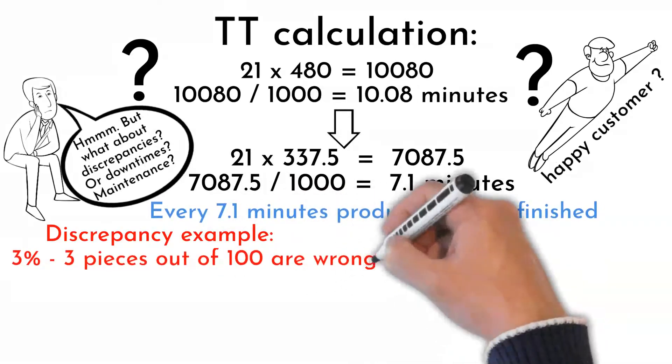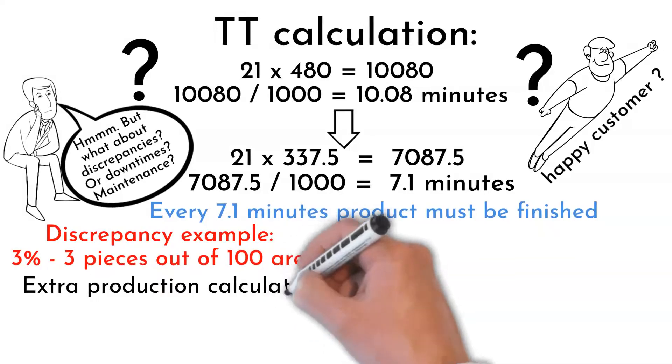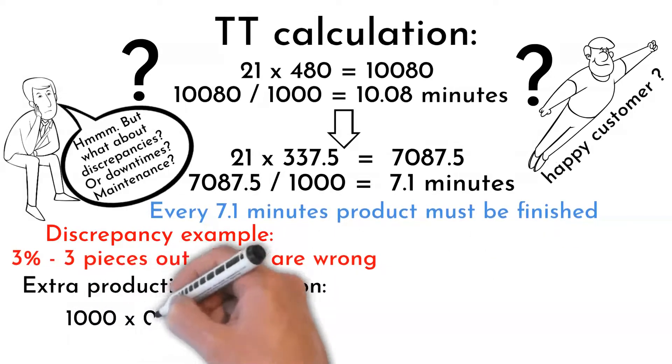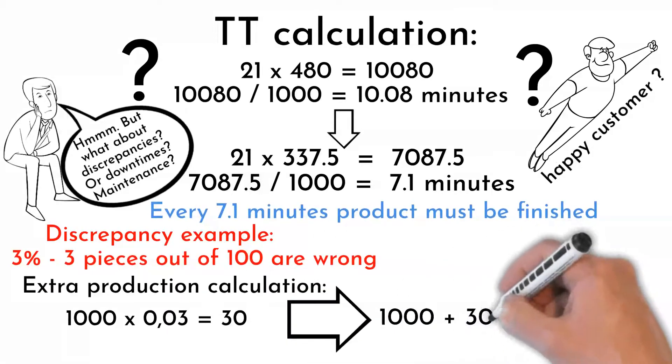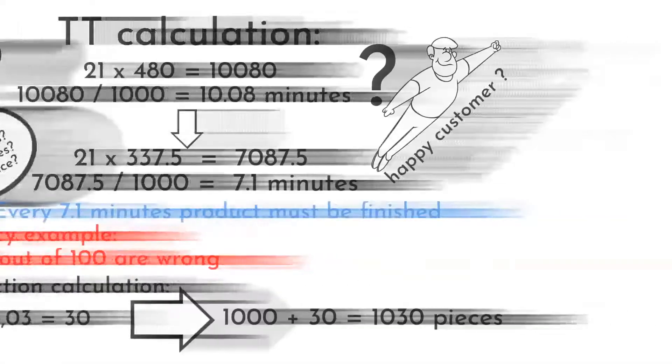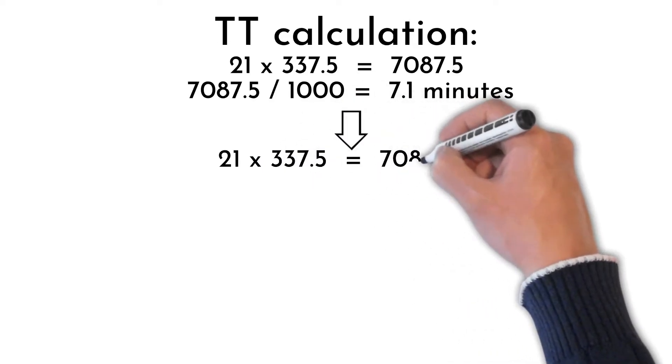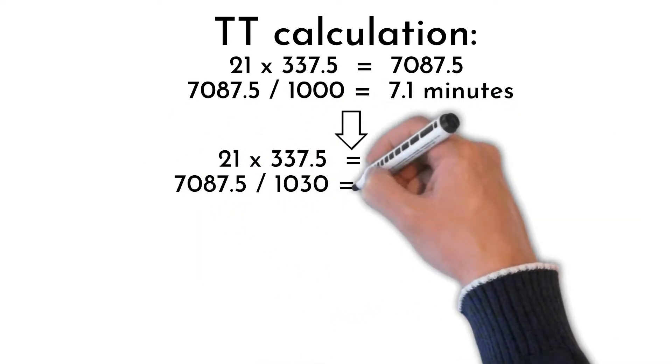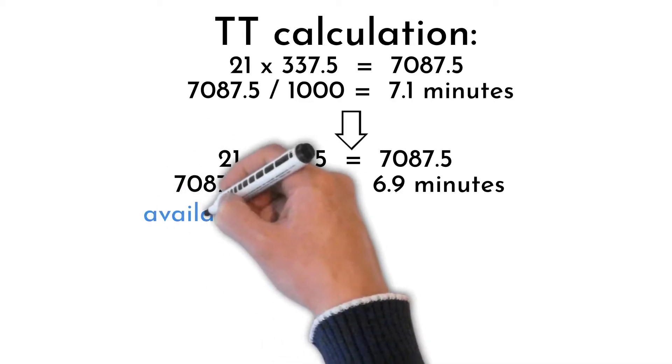Three percent discrepancies will affect takt time this way: 3% discrepancy ratio means something is wrong with three pieces out of 100 produced pieces. Those pieces must be extra produced to fulfill customer needs. So to produce 1000 okay pieces we have to make 30 pieces more. 21 times 337.5 divided by 1030 equals 6.9 minutes.